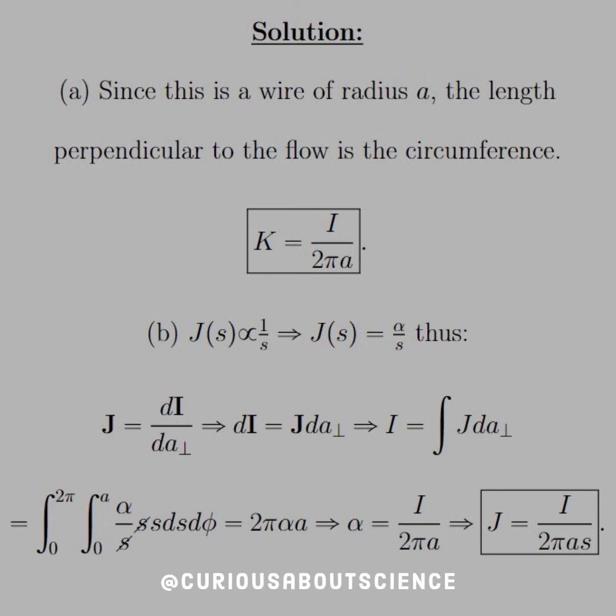Now we can use the definition of the volume current density to solve for I, and then eventually we'll find α from that. So solving this equation for dI and then integrating,